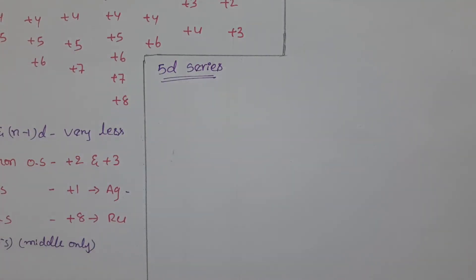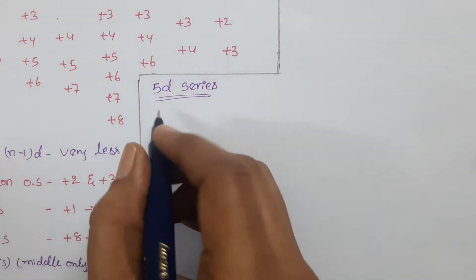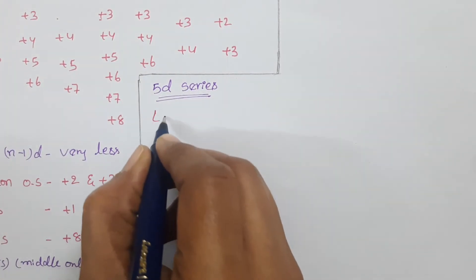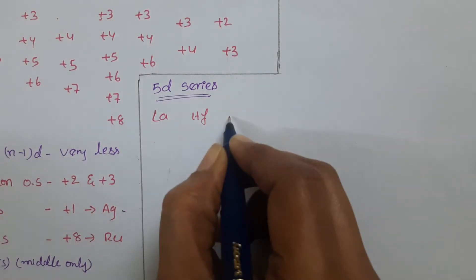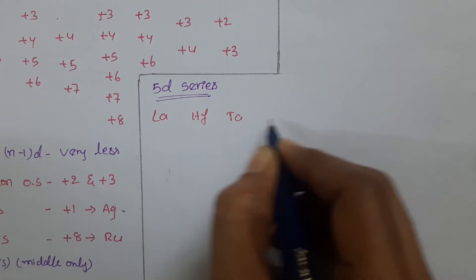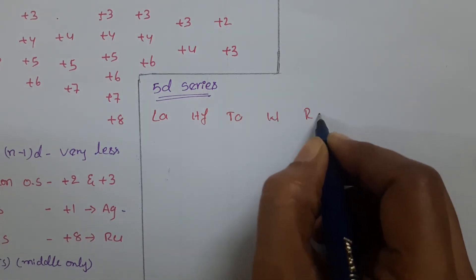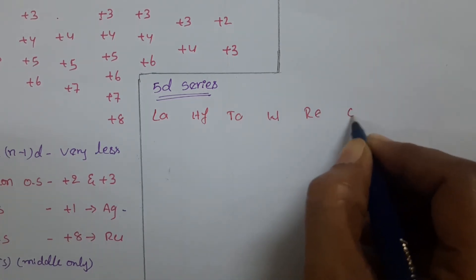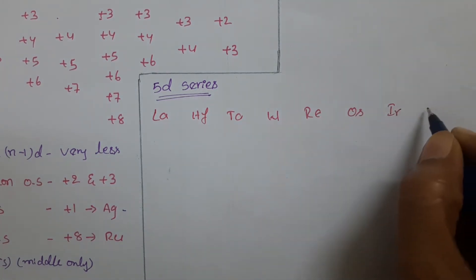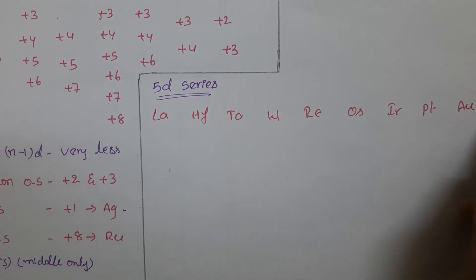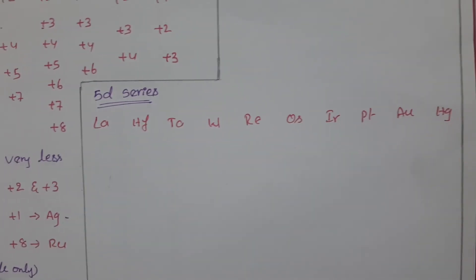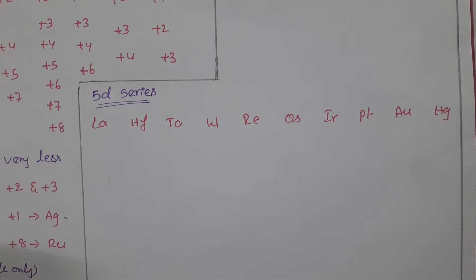Next let us see the 5d series elements. The elements are lanthanum, hafnium, tantalum, tungsten, rhenium, osmium, iridium, platinum, gold, and mercury. Now let us see the variable oxidation states of these elements.